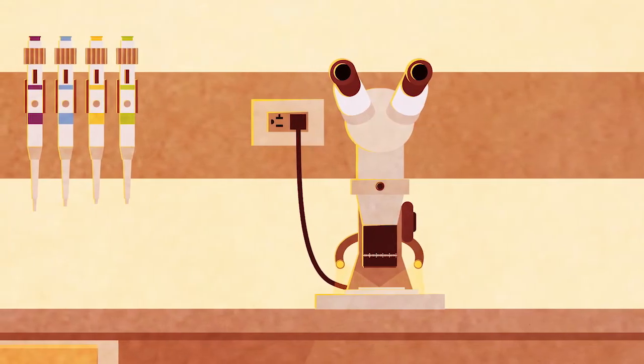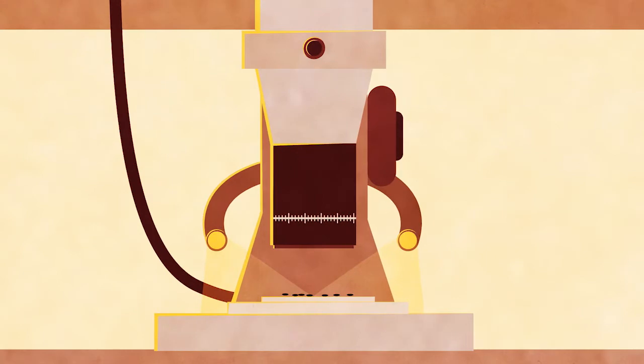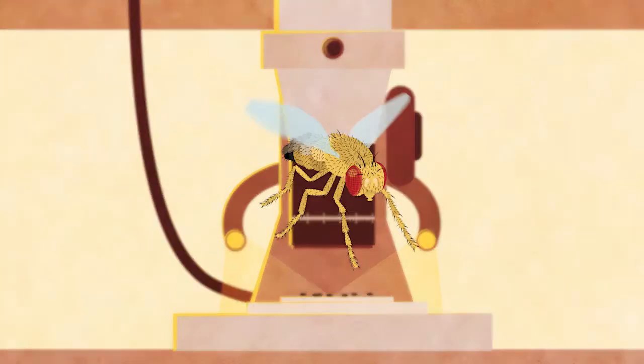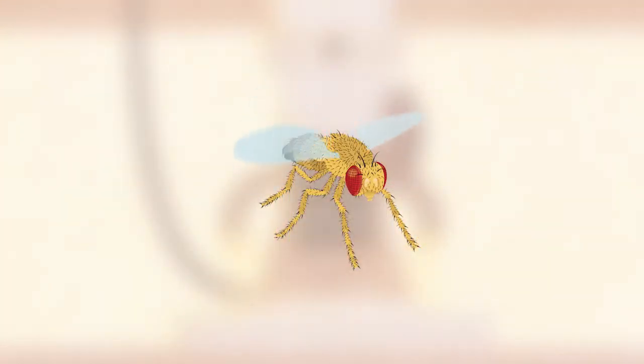For example, researchers at the University of Michigan Life Sciences Institute are using fruit flies to better understand Down syndrome and to search for potential treatments.